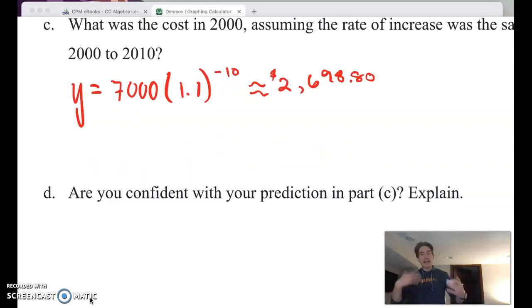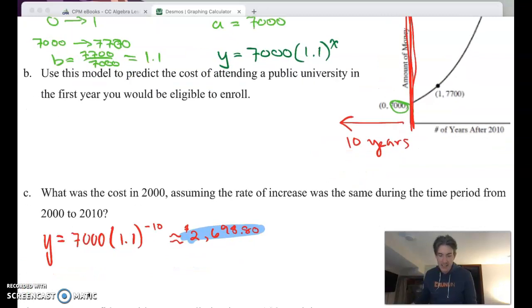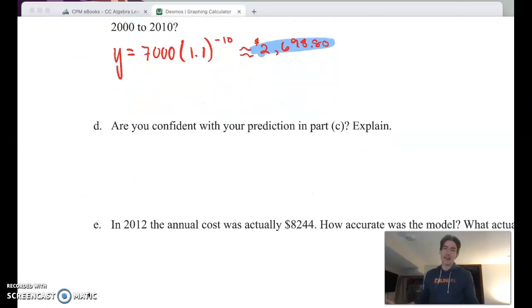Here's part D. Are you confident with your prediction in part C? Explain. Well, first and foremost, we could probably go look this up. So our model to make a prediction probably isn't going to be helpful. So maybe spending the time doing some researching to figure out what it actually costs would be better. But in general, it's not a good idea to make an extrapolation that far back in time. This is well outside of our known data. I've got two pieces of data here and they are 2010 and then 2011. So to go that far back in time, probably not a good idea. I would not be confident in this. I wouldn't bet anyone on this.